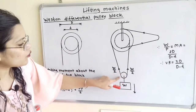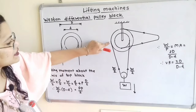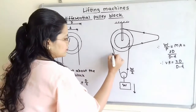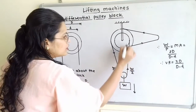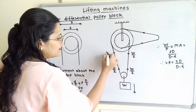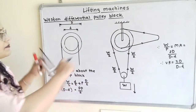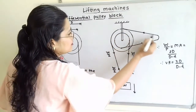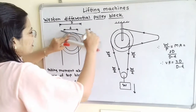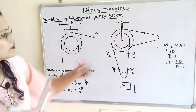The tension on the lower pulley block acts in the upward direction. The same tension is created at the top pulley block but in the opposite direction, and it is also equal to W/2 on each side. We have to apply the effort at the chain coming from the larger wheel, and we will call this effort P.